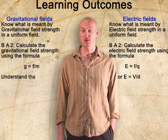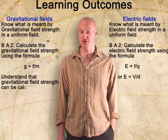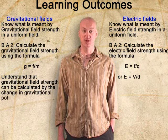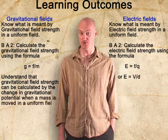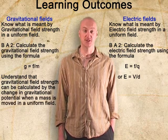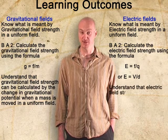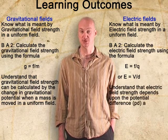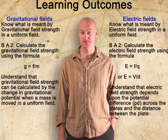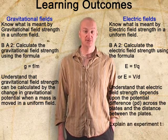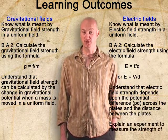You should also understand that we can calculate the gravitational field strength by the change in potential if we move a mass in a uniform field. Also, the strength of a uniform electric field depends upon the potential difference across the plates and the distance between them. You shall also see an experiment to measure the strength of a uniform electric field.